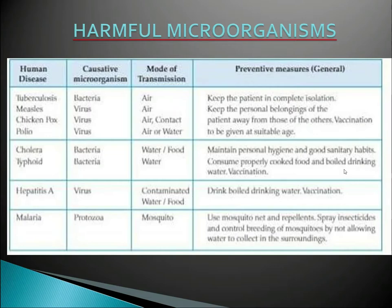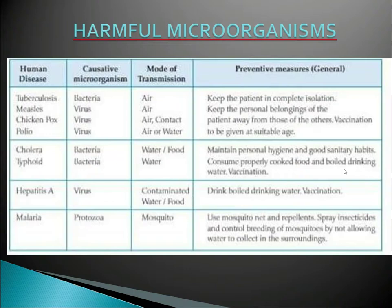Some insects and animals carry disease-causing microbes. Houseflies and mosquitoes are such carriers. Flies sit on garbage and animal excreta, so pathogens stick to their bodies. When these flies sit on uncovered food, they may transfer the pathogens. Consuming contaminated food is likely to make a person sick, and this is how disease is transmitted from one person to another.